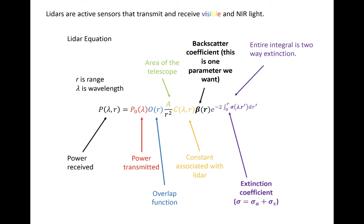The overlap function, shown in blue, represents the range-dependent fraction of the transmitted signal's cross-section that is contained within the receiver's field of view. We won't delve more into the lidar equation with much detail, but we will look shortly at some examples of lidar backscatter.